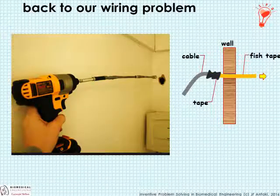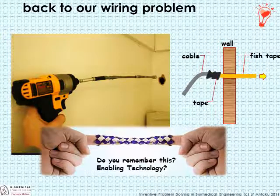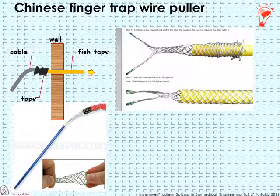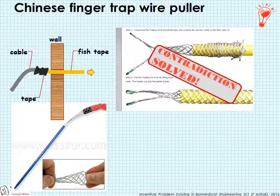Returning to the wiring problem: were you able to come up with an inventive solution — something that is large enough to provide the gripping strength of electrical tape, but yet small enough to go through the hole in the wall? Do you remember this thing? This is actually an enabling technology — you can see how it could potentially be used to link the cable and the fish tape without adding to the diameter. Sure enough, this is an actual thing: a Chinese finger trap-based wire puller or cable puller. It's actually an invention, it's patented, and it's a product. Contradiction solved.